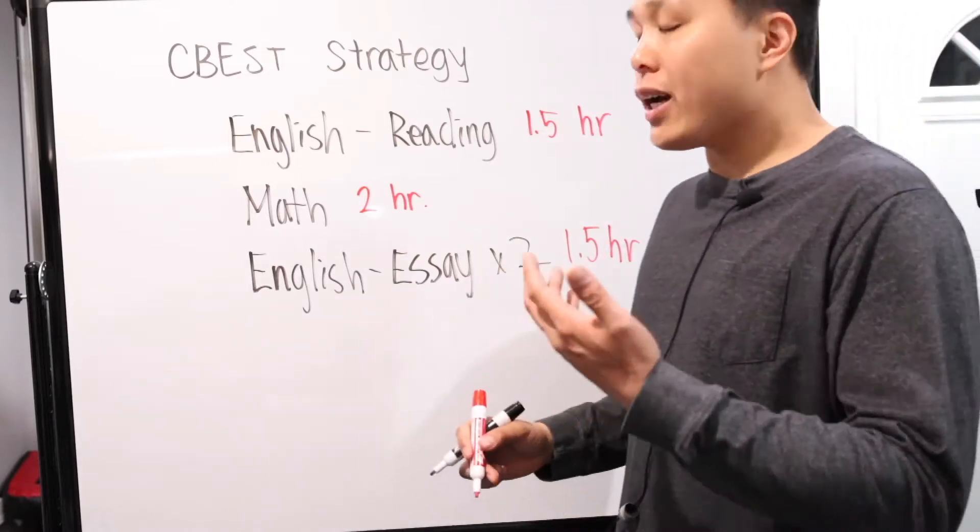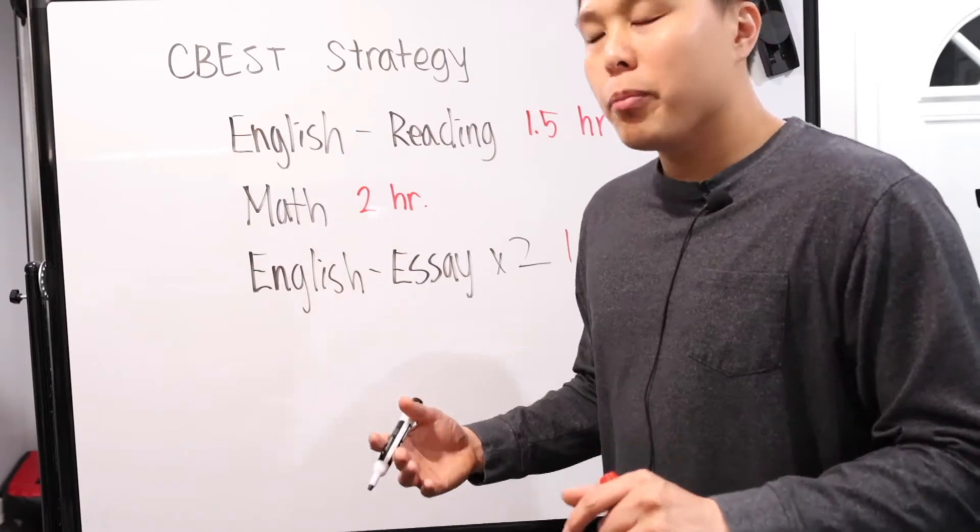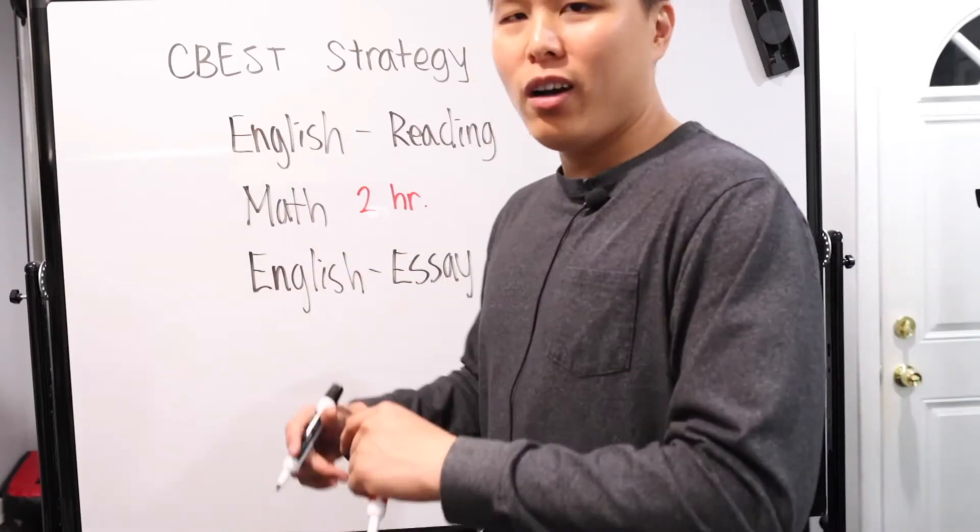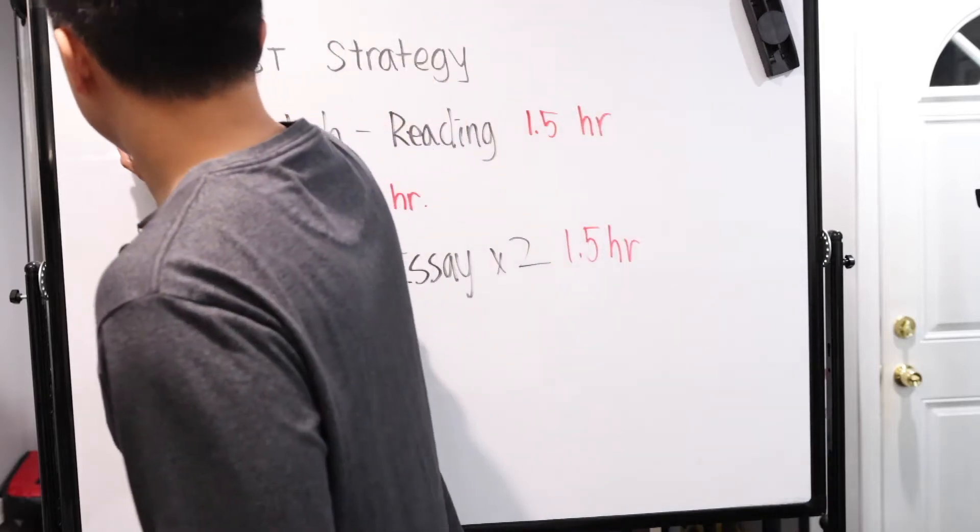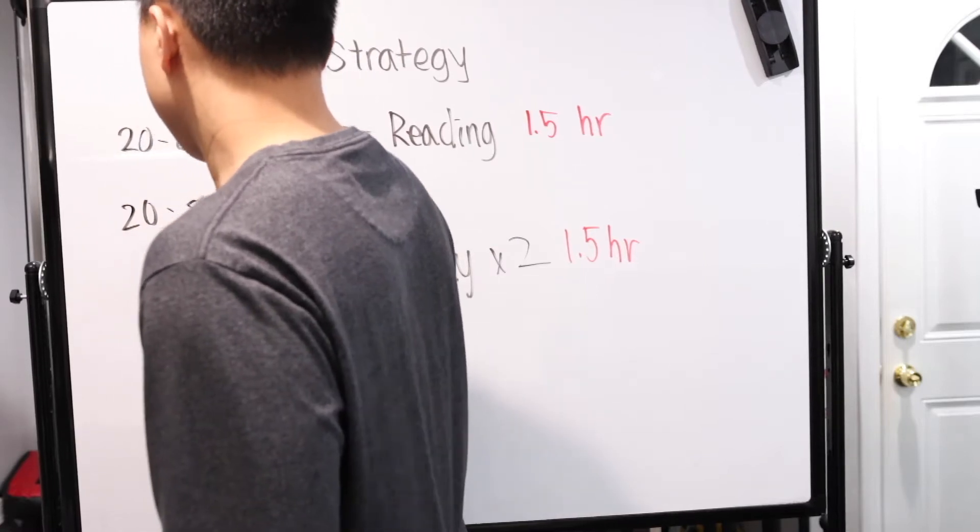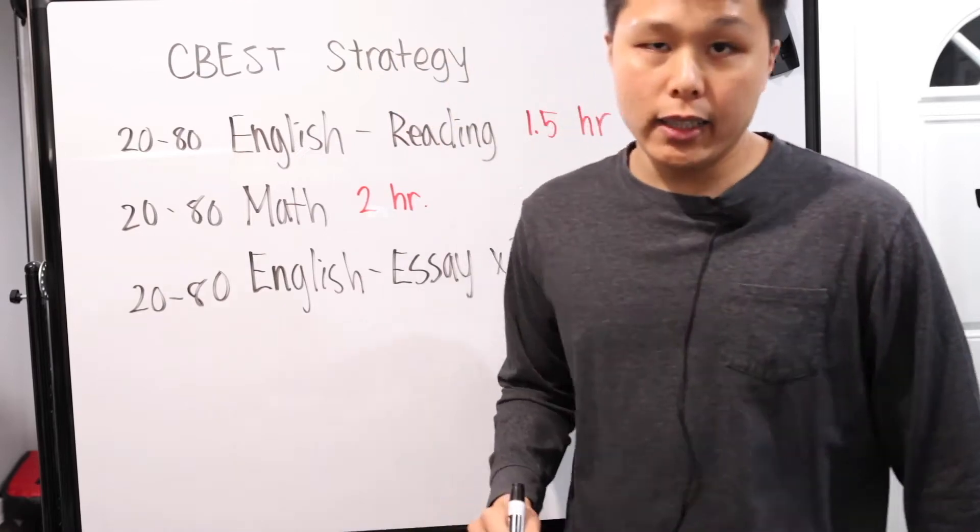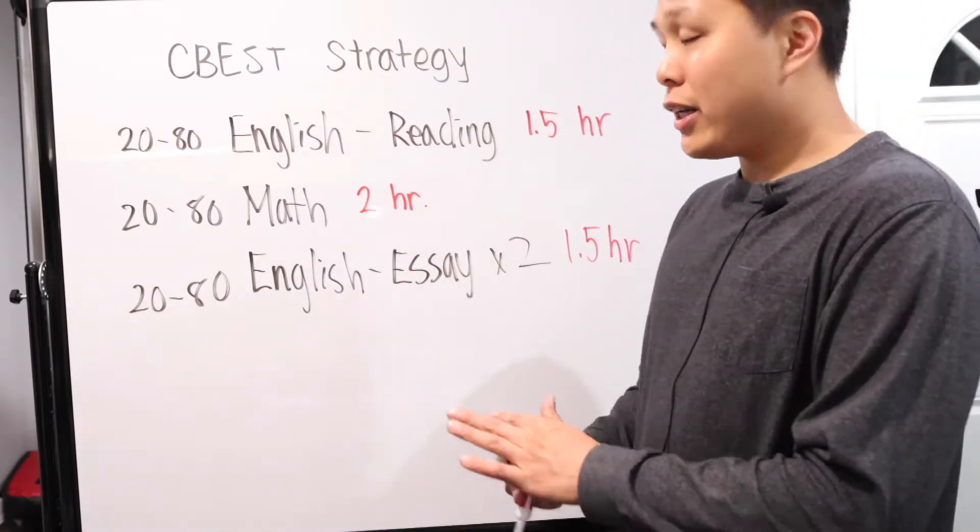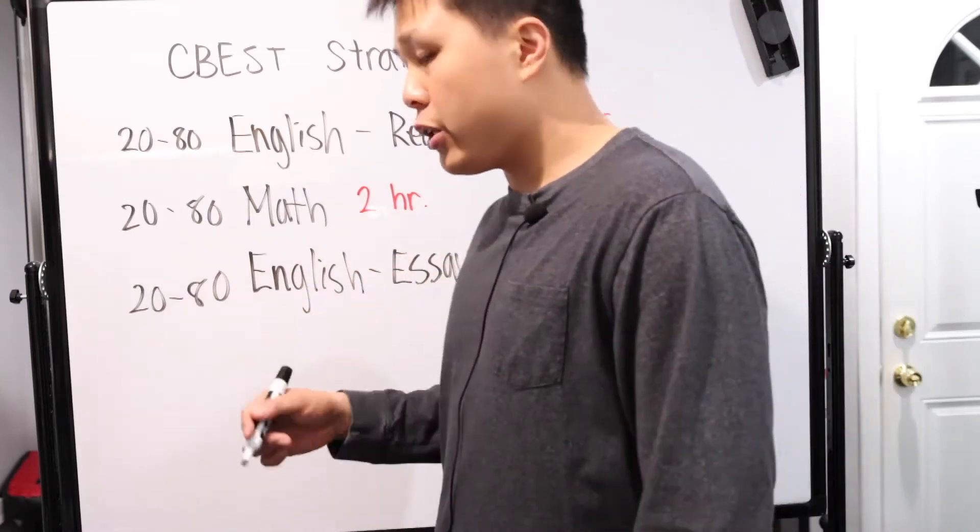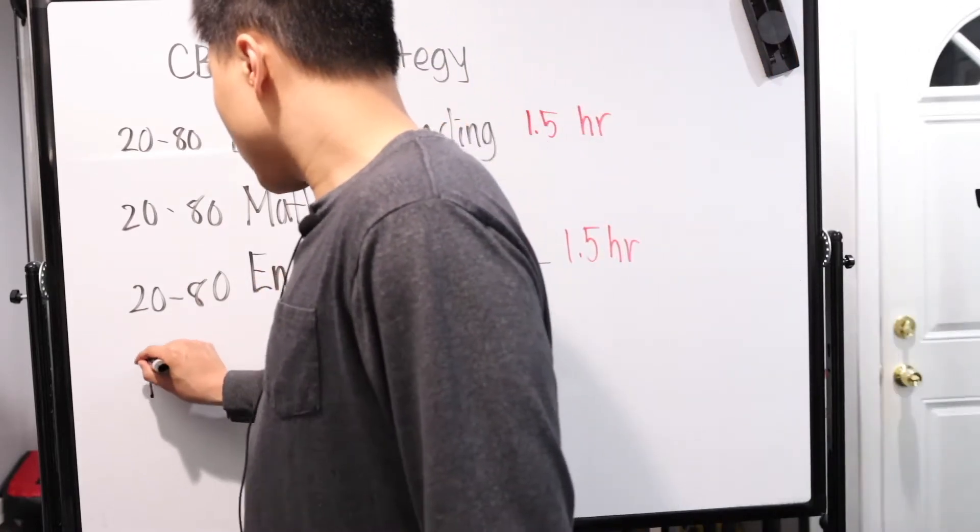The second thing is that each and every one of these sections are graded on a score scale. That is super weird because all standardized tests do this. I have no idea why, but they just do it anyway. Each and every one of them are graded between 20 to 80. So whatever score you get is always going to fall between 20 and 80.